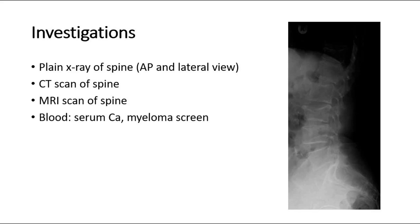For investigations, perform a plain film radiograph as the first-line investigation for those with suspected spinal column injury without abnormal neurological signs or symptoms. Perform a CT scan if the radiograph is abnormal or there are clinical signs or symptoms suggestive of a spinal column injury. MRI imaging is also useful to assess for concurrent injury of soft tissue structures. This picture shows a plain X-ray showing compression fracture of L3.